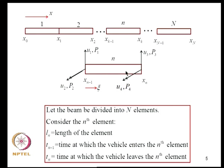L_N is the length of the beam element, and T_{N-1} is the time at which the vehicle enters the nth element; at T_N it exits the nth element. So we are considering what happens during the time period when the vehicle enters this element and leaves it.